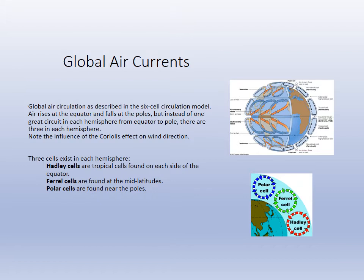Between the Ferrel cells and the polar cells is the jet stream, and the jet stream rises and falls seasonally. This is an idealized model dividing the earth into three equal parts: zero to 30, 30 to 60, and 60 to 90 degrees. During the summer and winter there are slightly different configurations of these cells.